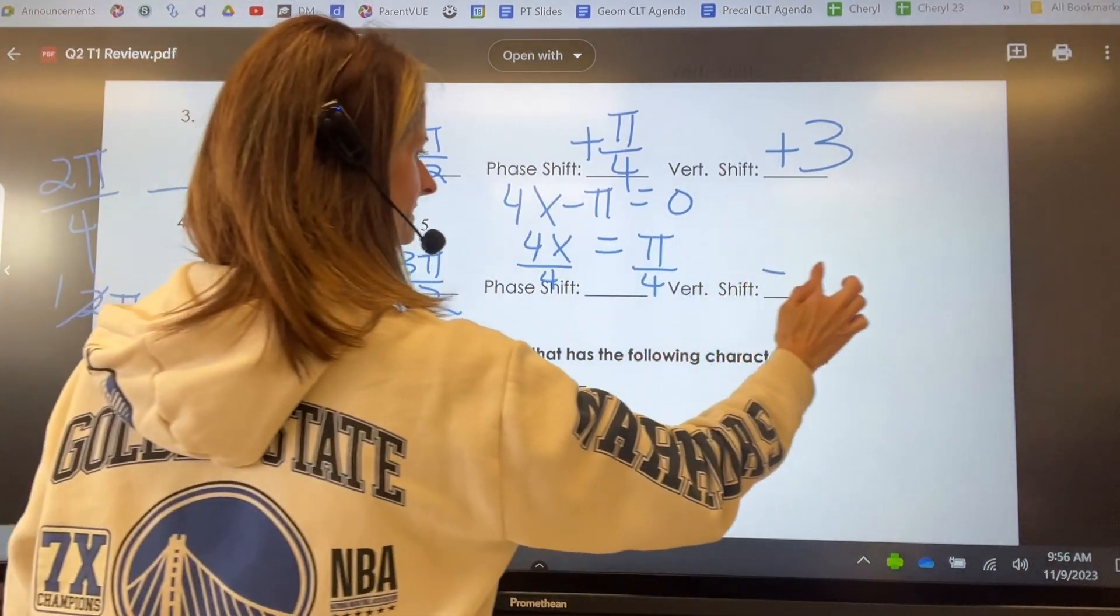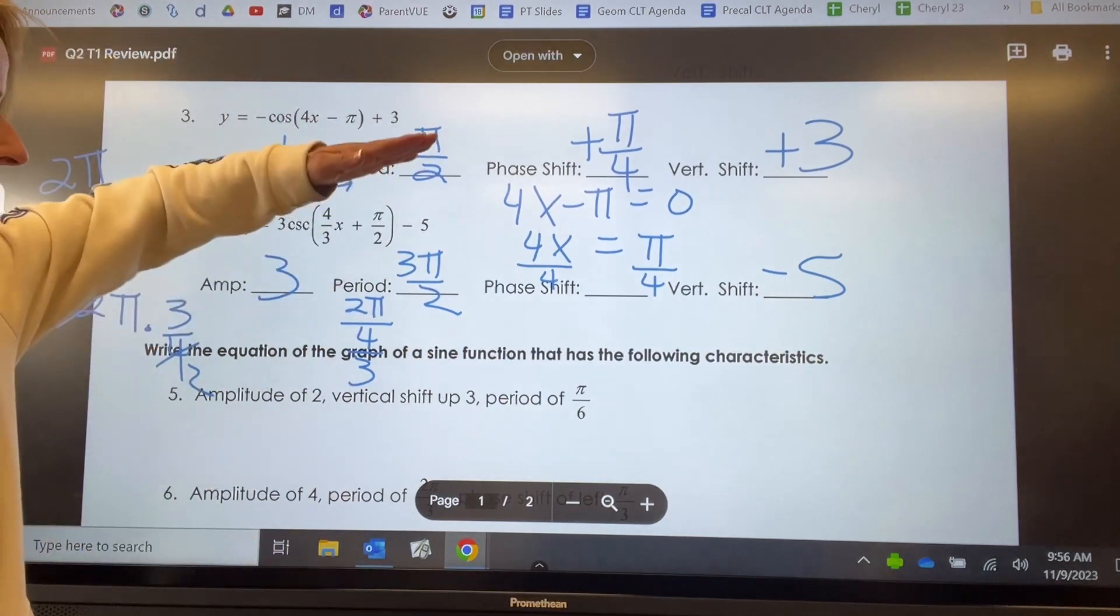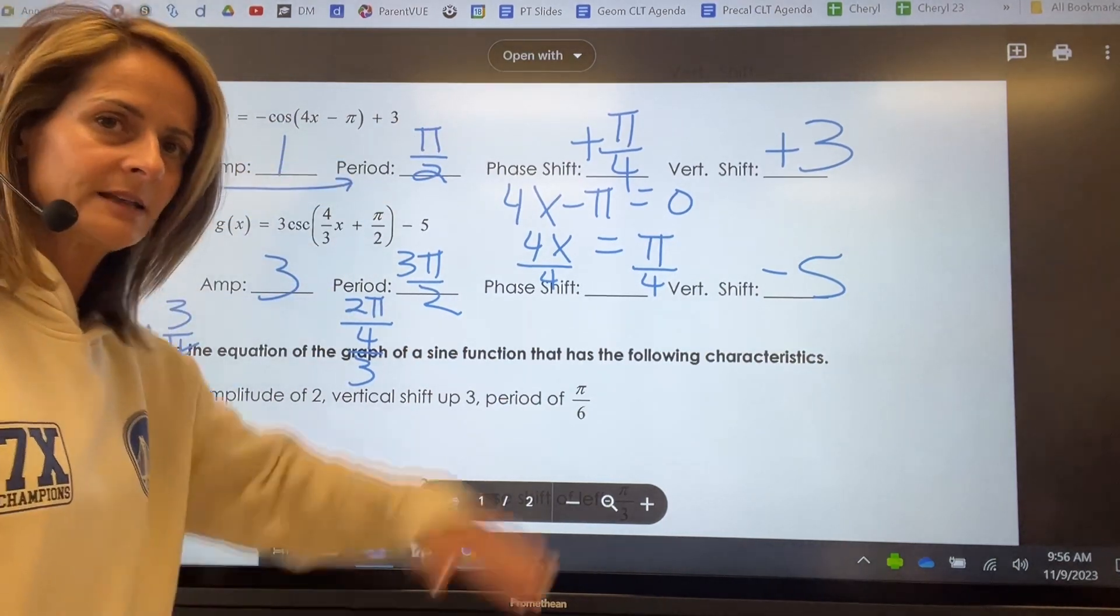Clearly the vertical shift is going to be down five. Taking that whole function and moving it down five. That midline is going to go down five.